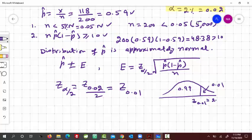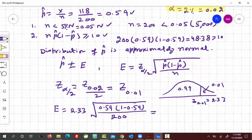And now just compute e, and e would be 2.33 times the square root of p hat 0.59 times 1 minus 0.59, and then divided by 200,